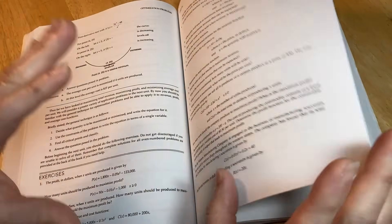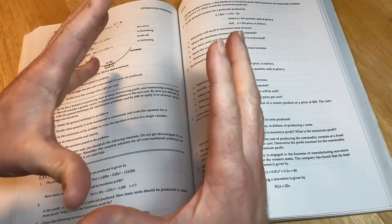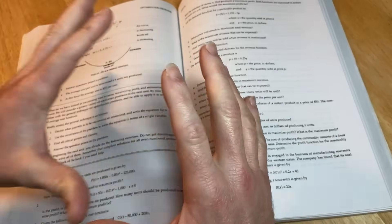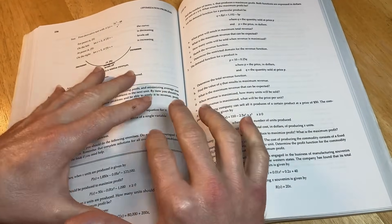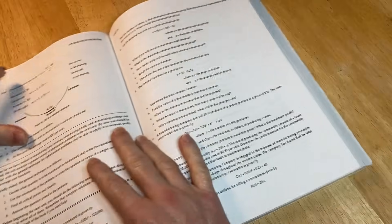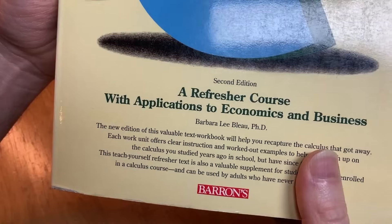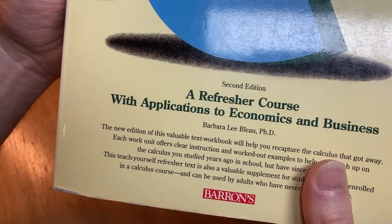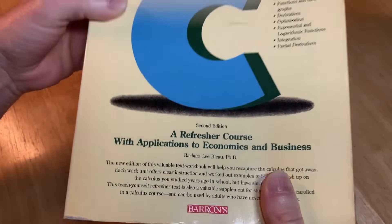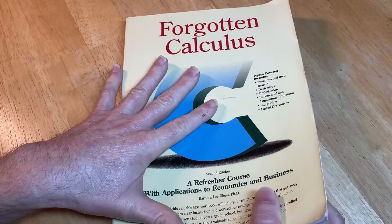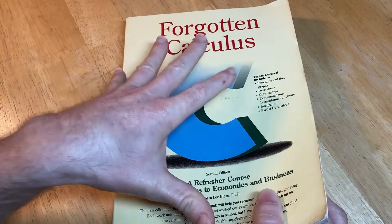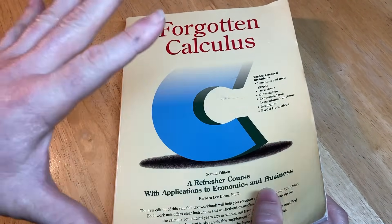And those books basically go over tons of mathematics and they just have examples and the examples are good. This is a book like that, except it's just for calculus. This book is incredible. It's called Forgotten Calculus. And it says a refresher course with applications to economics and business. So it's kind of like a refresher course for business calculus students.